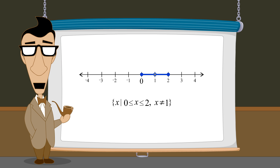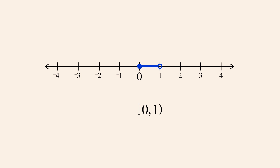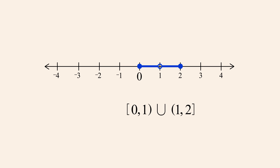So this set cannot be described by a single interval. However, sometimes it is easier and more clear to describe regions of the number line like this set using interval notation. This can be accomplished by combining intervals. Since intervals are sets, we can use set operations to combine multiple intervals into one set. For example, we can take the left-closed right-open interval between zero and one and the left-open right-closed interval between one and two and take their union to create the desired set.